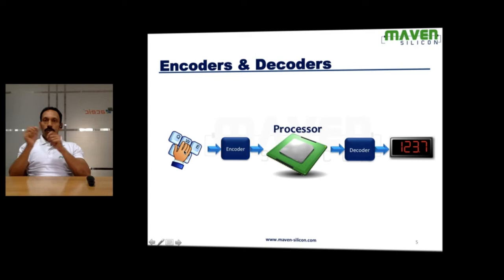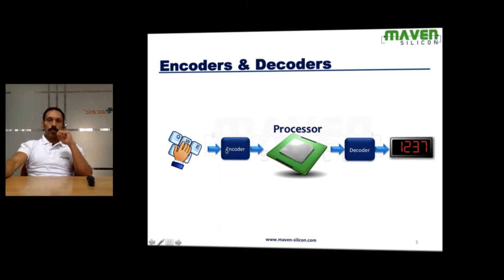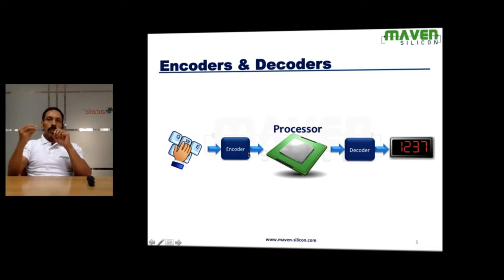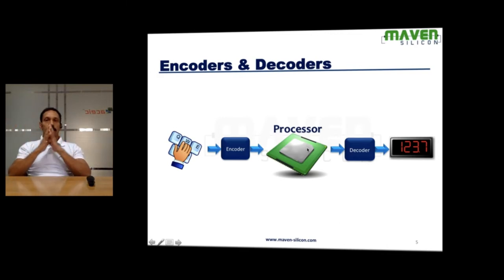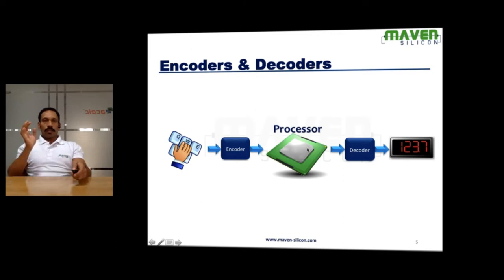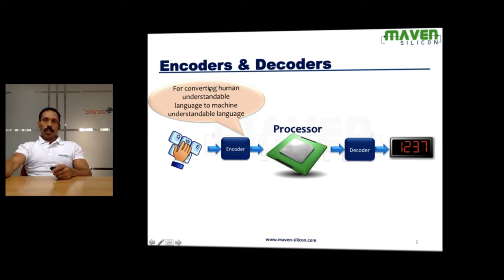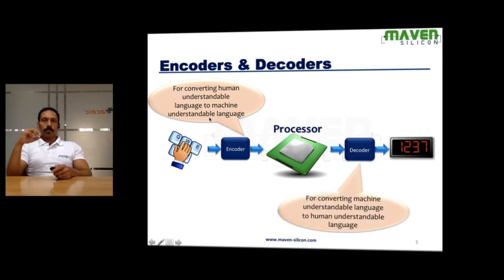The same applies to controlling the volume of the speaker. There are buttons on the keyboard — when you press a particular key, it produces a pulse that goes to the encoder, and based on the ASCII code, it produces the equivalent binary. Based on that binary, the processor controls the volume. This is how the digital system works. The encoder converts human-understandable language into machine-understandable language, and the decoder is the opposite — it converts machine-understandable language into human-understandable language.